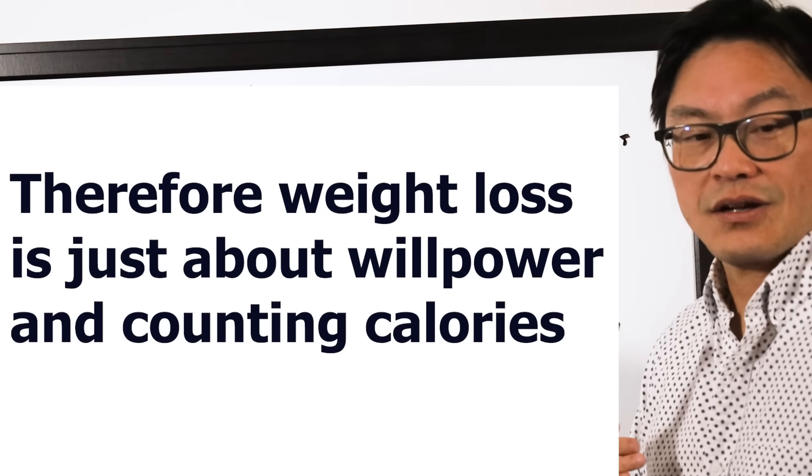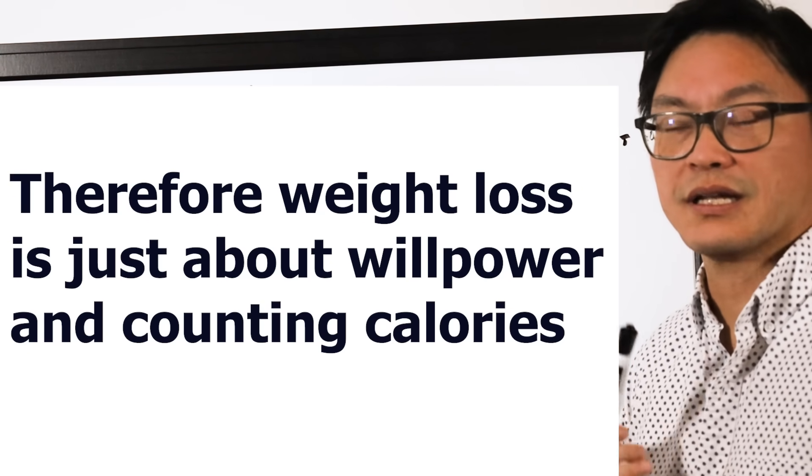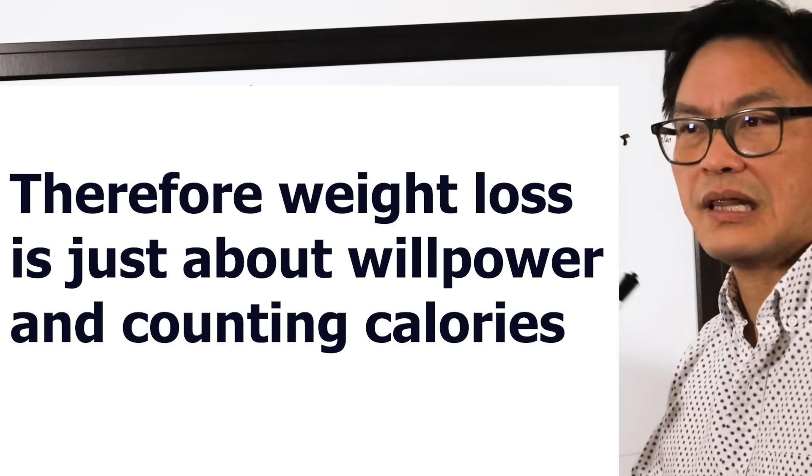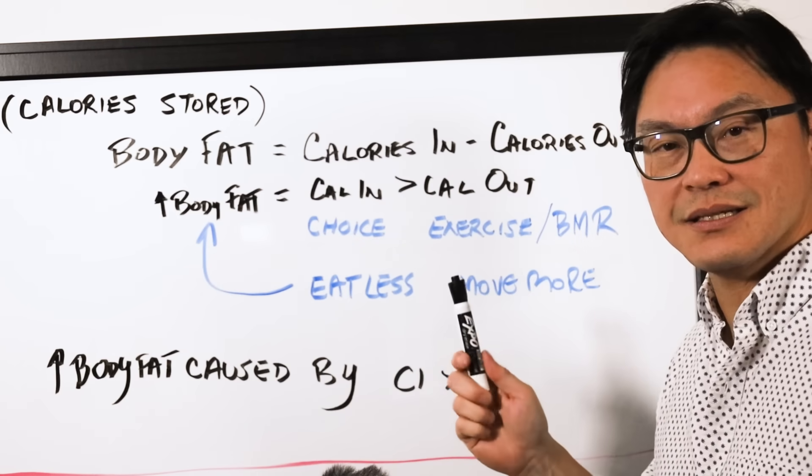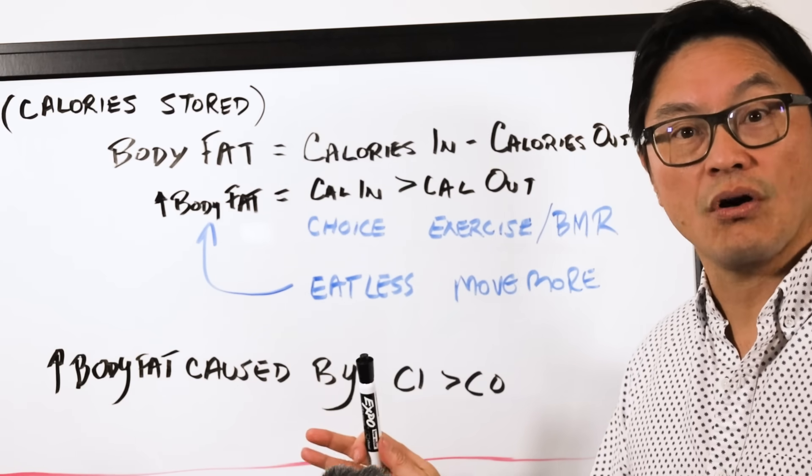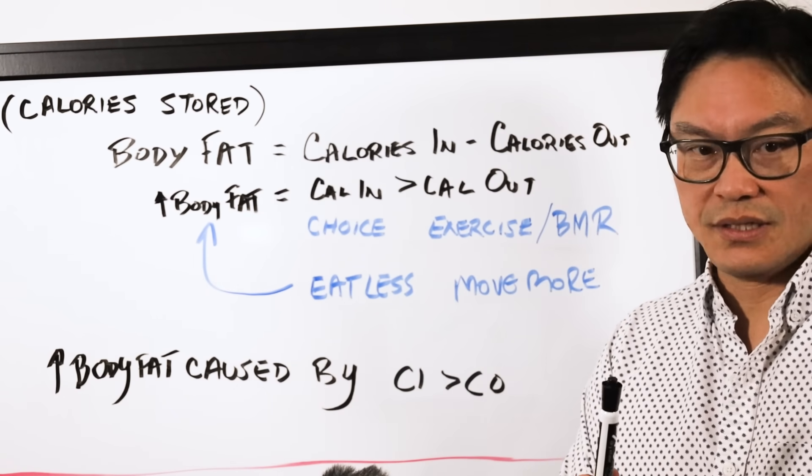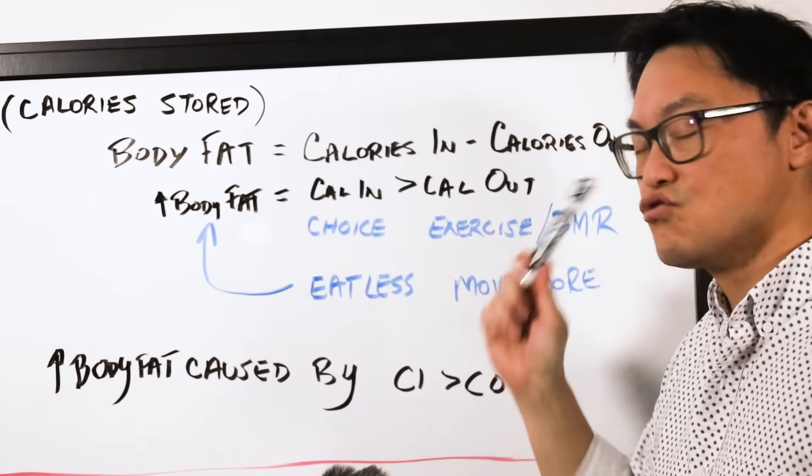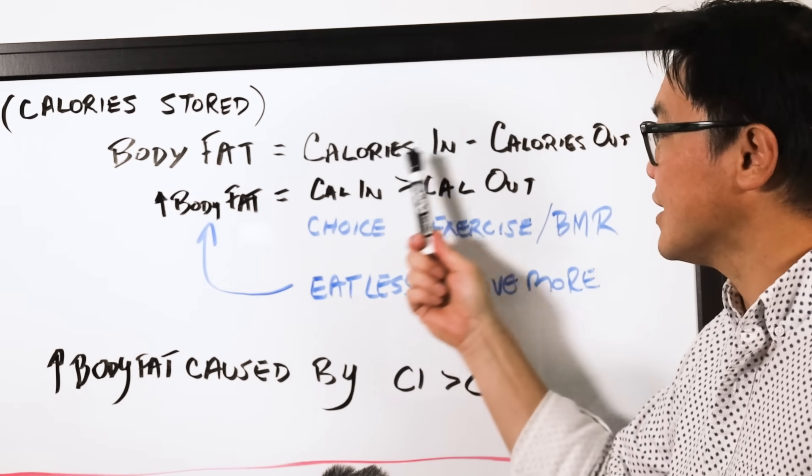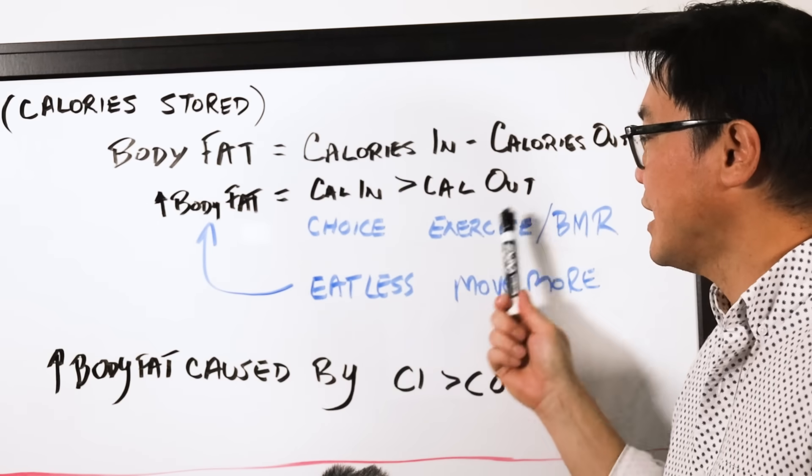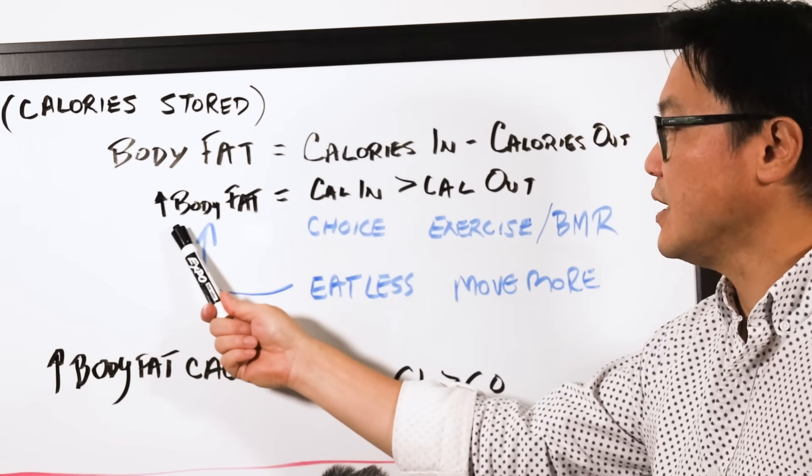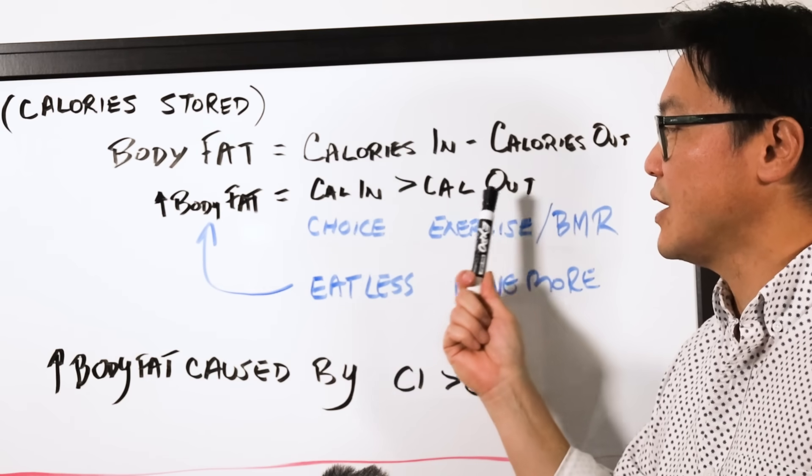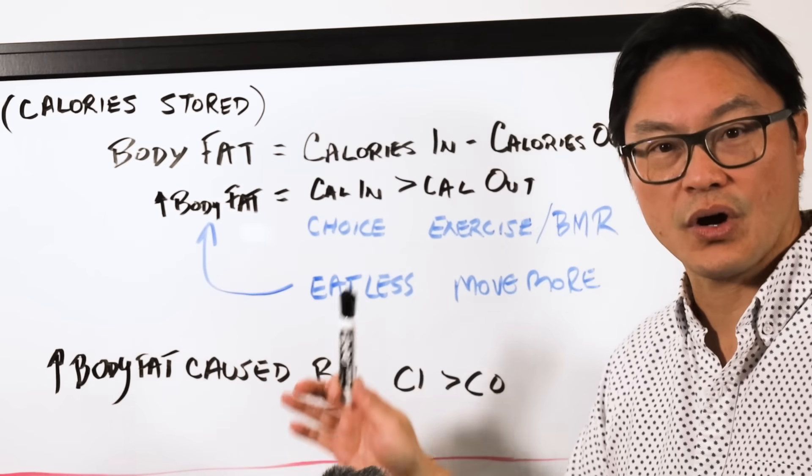This causes us to consider obesity as a personal failing. It's a lack of willpower. This is actually not true at all for several reasons. First, this assumes that the control lies here in what you eat and how much you exercise, and this is dependent upon the calories in calories out, and there is nothing that controls the body fat.